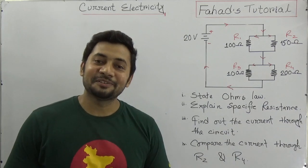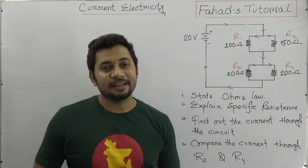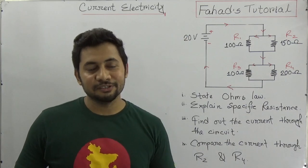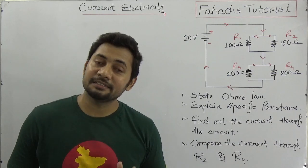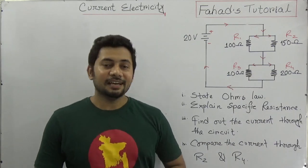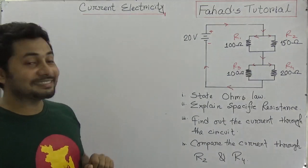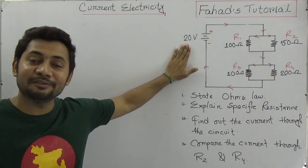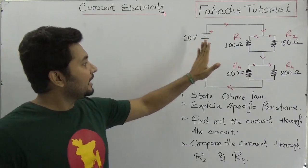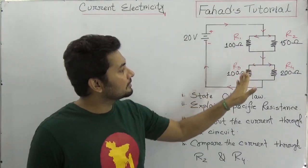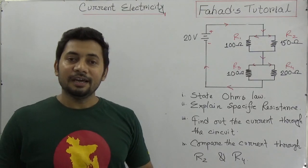Salam alaikum, my dear viewers and listeners. Let's solve another creative solution from the chapter on current electricity. In this circuit, 20 volts is the EMF or electromotive force, and four different resistances are given.